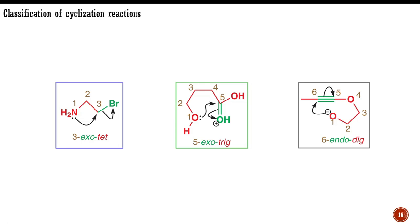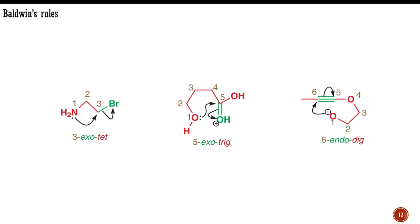The ring being formed has six members, the breaking carbon-carbon triple bond is inside the new ring and is endo, the carbon being attacked is a digonal atom abbreviated as dig. This system places the third cyclization as 6-endo-digonal.